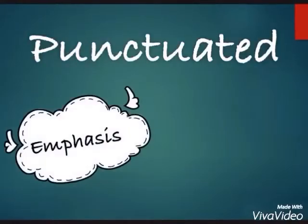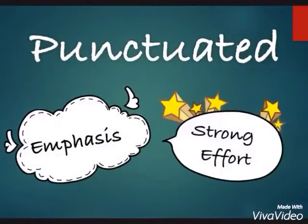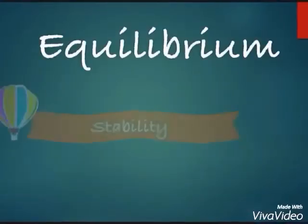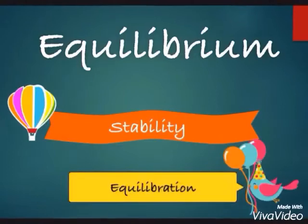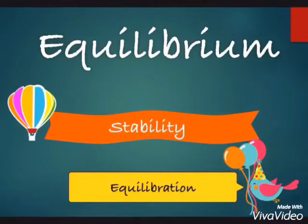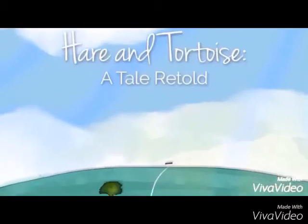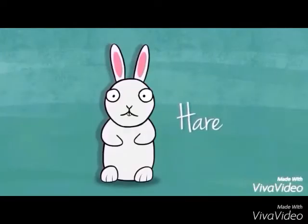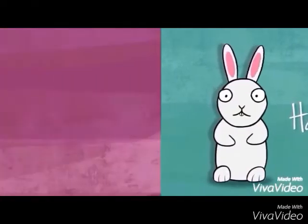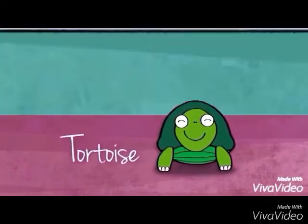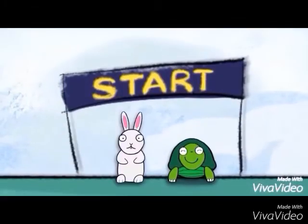Punctuated means emphasis or strong effort; on the other hand, equilibrium means stability or equilibration. To illustrate this, consider the story of the hare and the turtle. The hare was very swift and speedy, while the turtle was slow and steady.